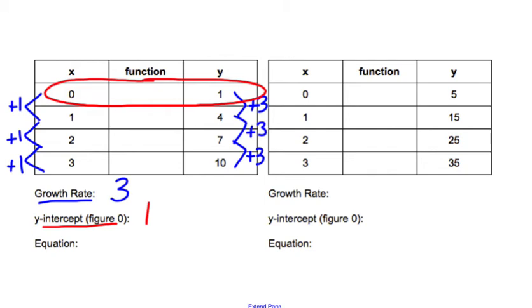Now we can use these to come up with the equation. y equals something times x plus a number. Remember, the number you multiply by x is the growth rate, so that's going to be 3 times x. Plus, this number, the last part of our equation, is going to be how many tiles are in figure 0, or what is the y-intercept. If you go back to your table, that's going to be 1. So our equation is y equals 3x plus 1.